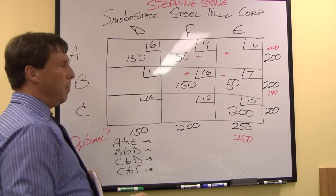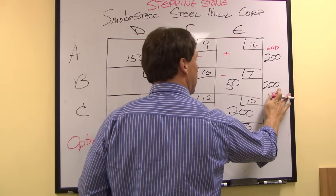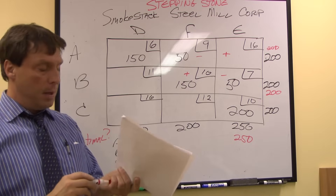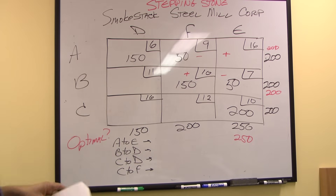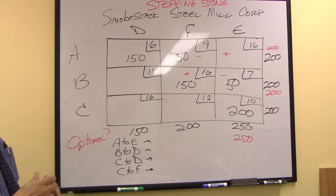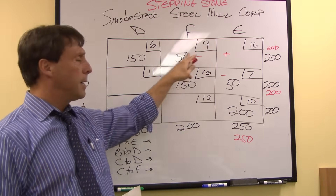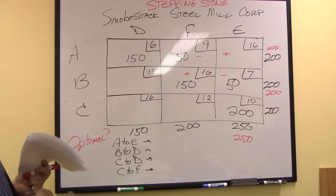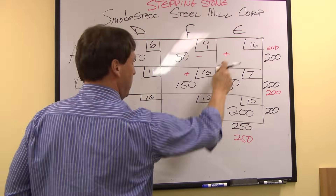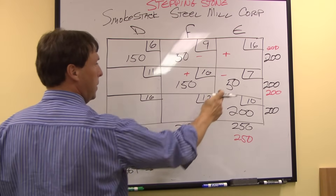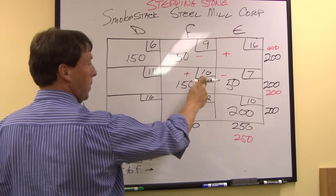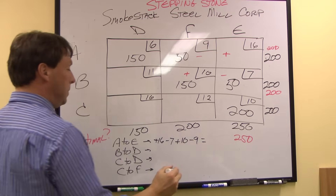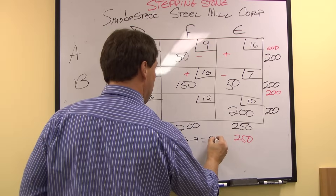So I have to add one back in to keep my supply constant. By doing the stepping stone — plus, minus, plus, minus — I've kept the integrity of my supply and my demand. Three out of the four boxes have shipping in it; the only one that doesn't is my unoccupied cell. So by adding one unit, I'm going to add $16 of cost, subtract $7 of cost, add $10, and subtract $9. So 26 minus 17 is a positive 9.